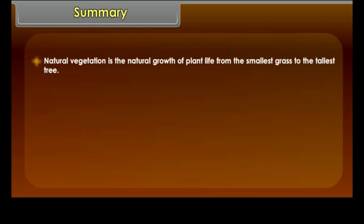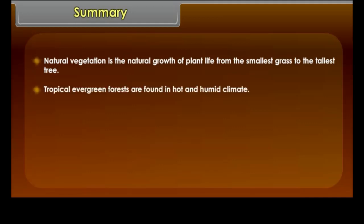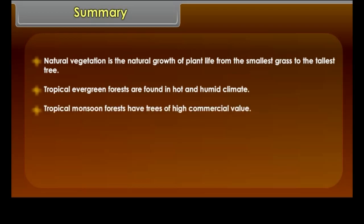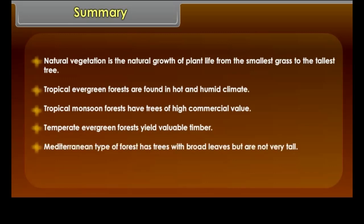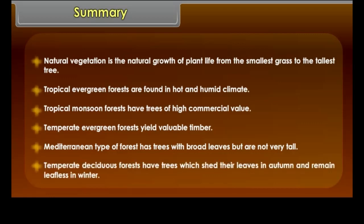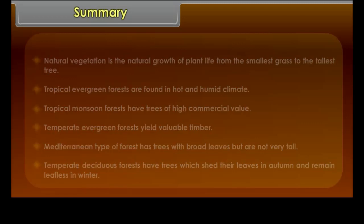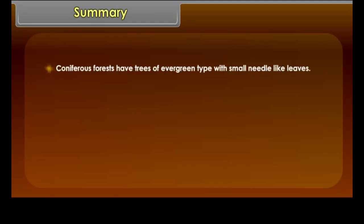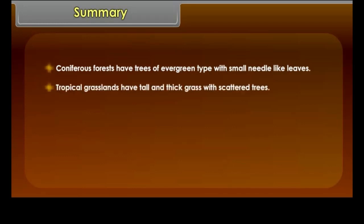Summary: Natural vegetation is the natural growth of plant life from the smallest grass to the tallest tree. Tropical evergreen forests are found in hot and humid climate. Tropical monsoon forests have trees of high commercial value. Temperate evergreen forests yield valuable timber. Mediterranean type forests have trees with broad leaves but are not very tall. Temperate deciduous forests have trees which shed their leaves in autumn and remain leafless in winter. Coniferous forests have trees of evergreen type with small needle-like leaves. Tropical grasslands have tall and thick grass with scattered trees.